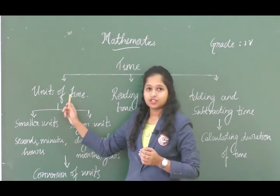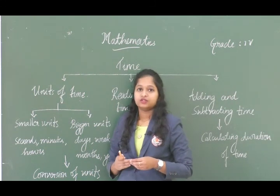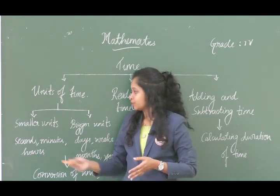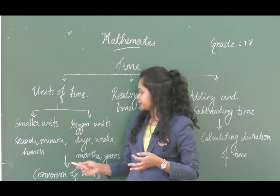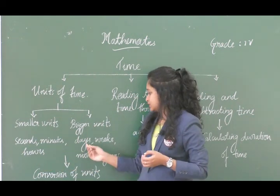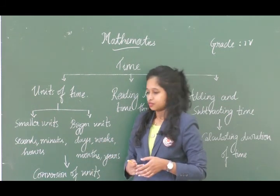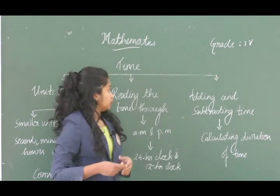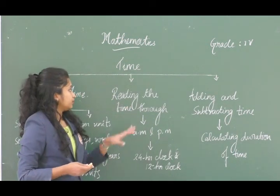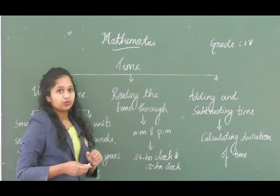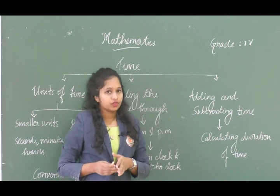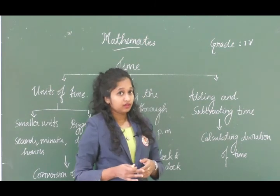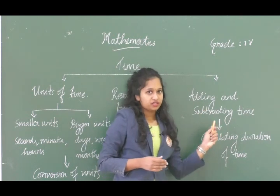This is the mind map for the chapter on Time. Under Time, we have smaller units and bigger units. Smaller units are seconds, minutes, and hours. Bigger units are days, weeks, months, and years. We will also learn the conversion of units, reading time through AM and PM, the 24-hour clock, the 12-hour clock, and how to add and subtract time.